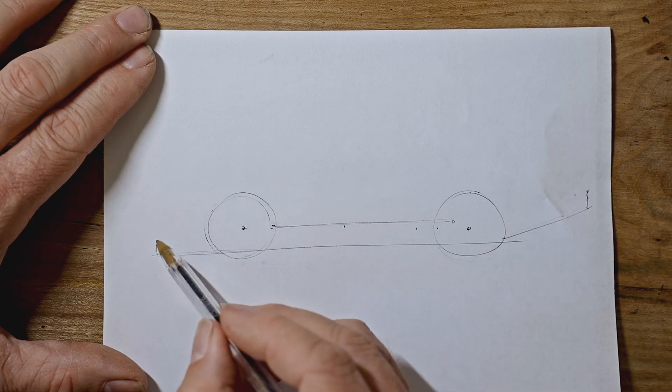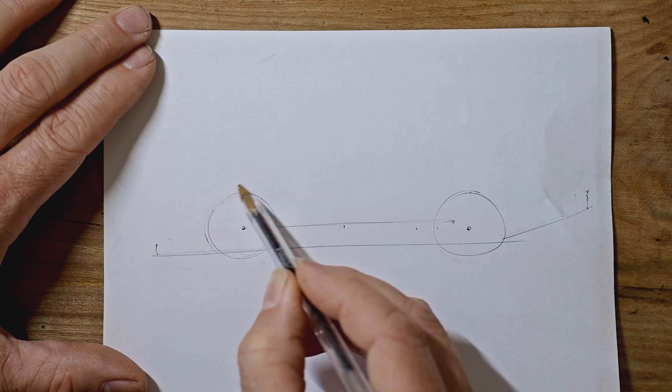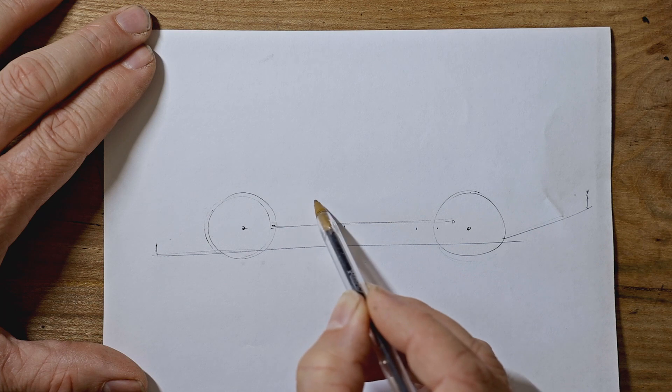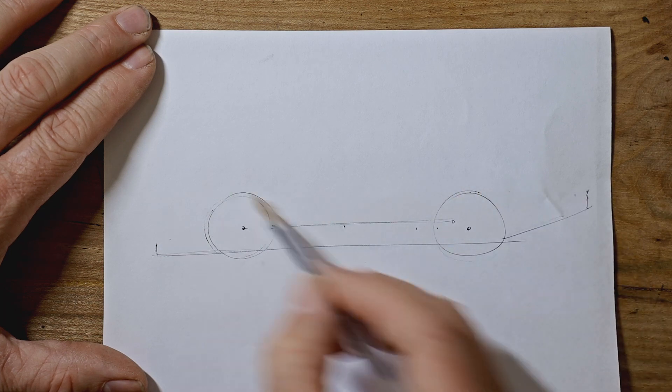Now's the tricky part, which is a curve that goes downwards over the light, upwards over the front wheel, then downwards, then back upwards again over the back wheel, and then downwards again. So lots of wheels.